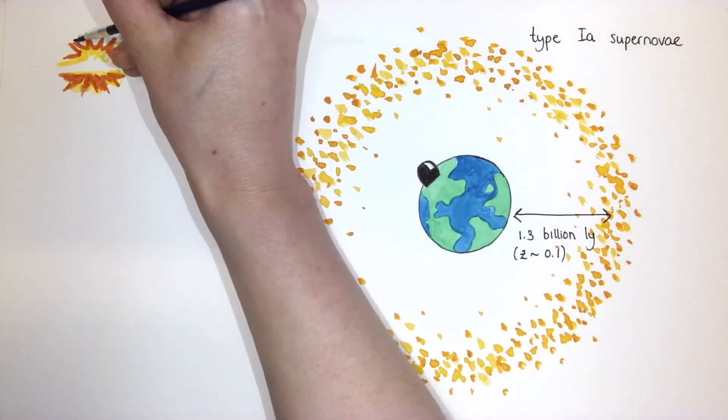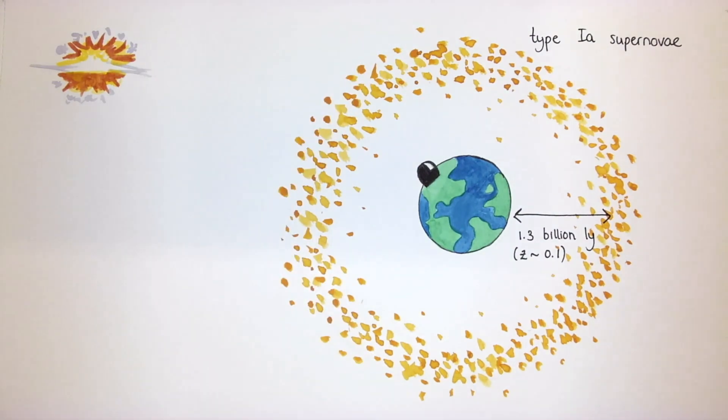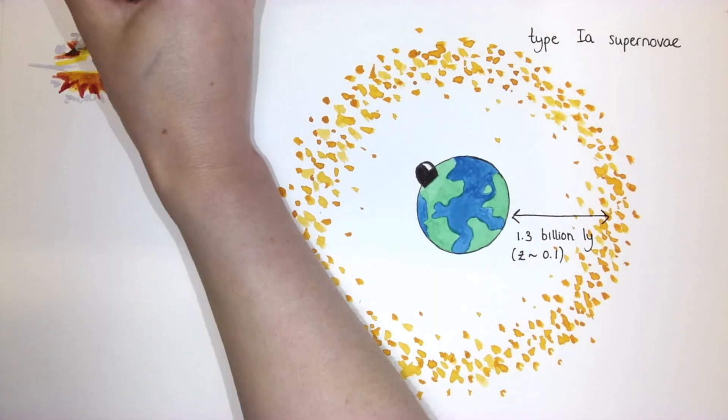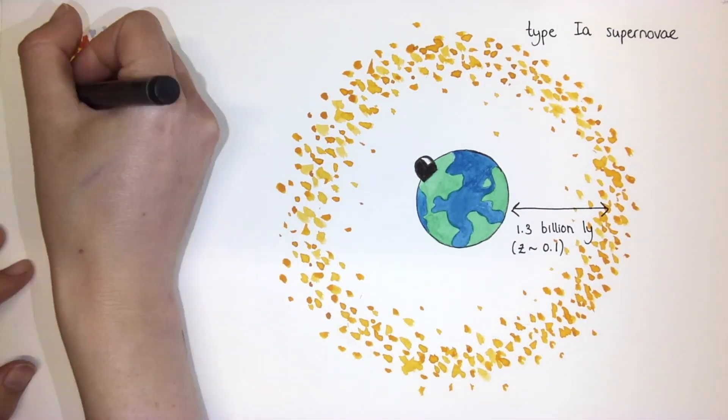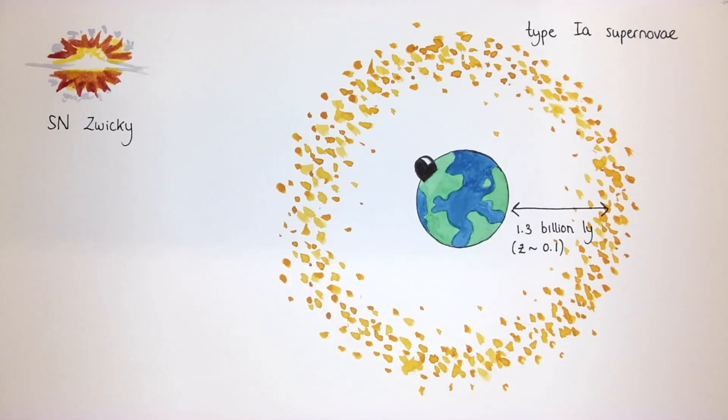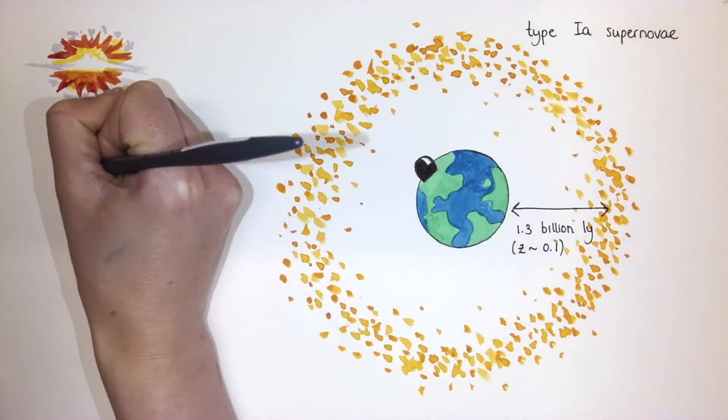ZTF has found thousands of such objects, but it had never seen a Type Ia supernova so far away as Supernova Zwicky. Gravitational lensing made this incredible discovery possible.